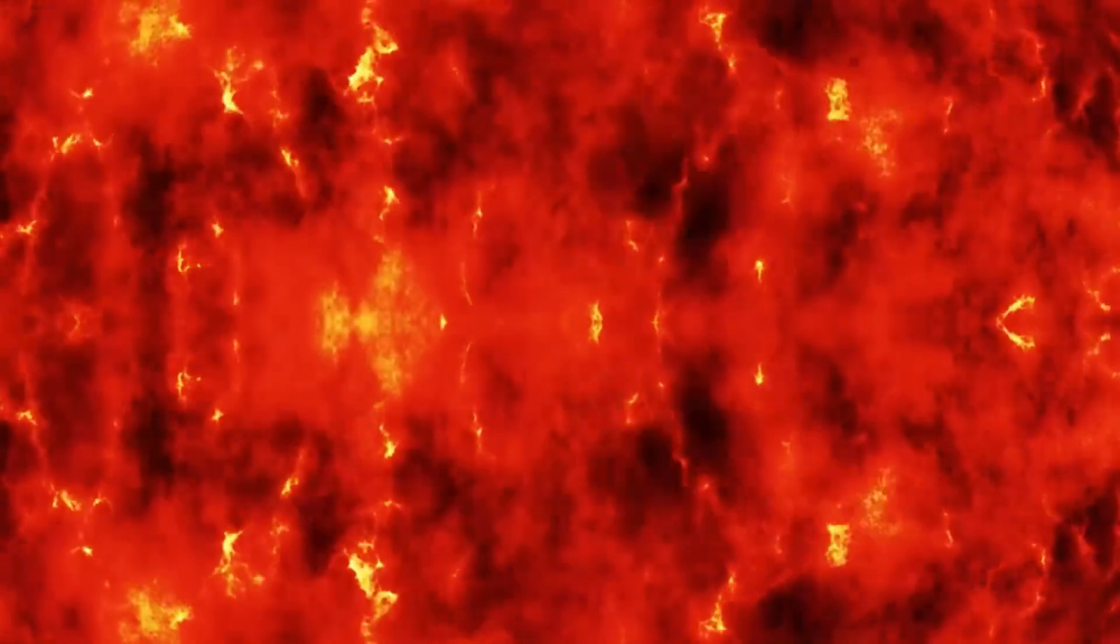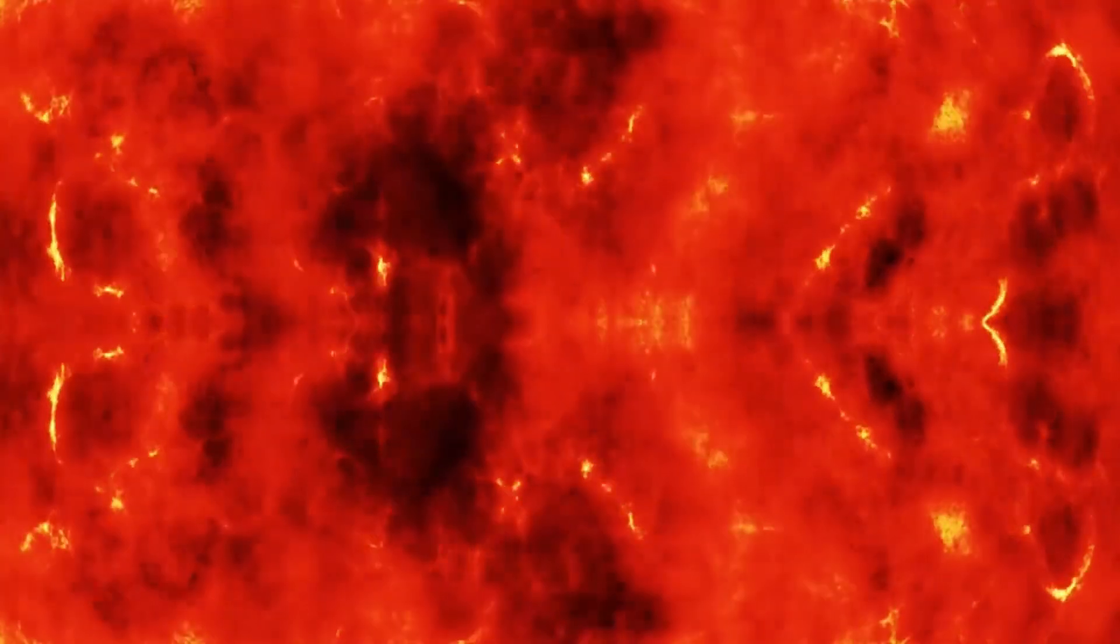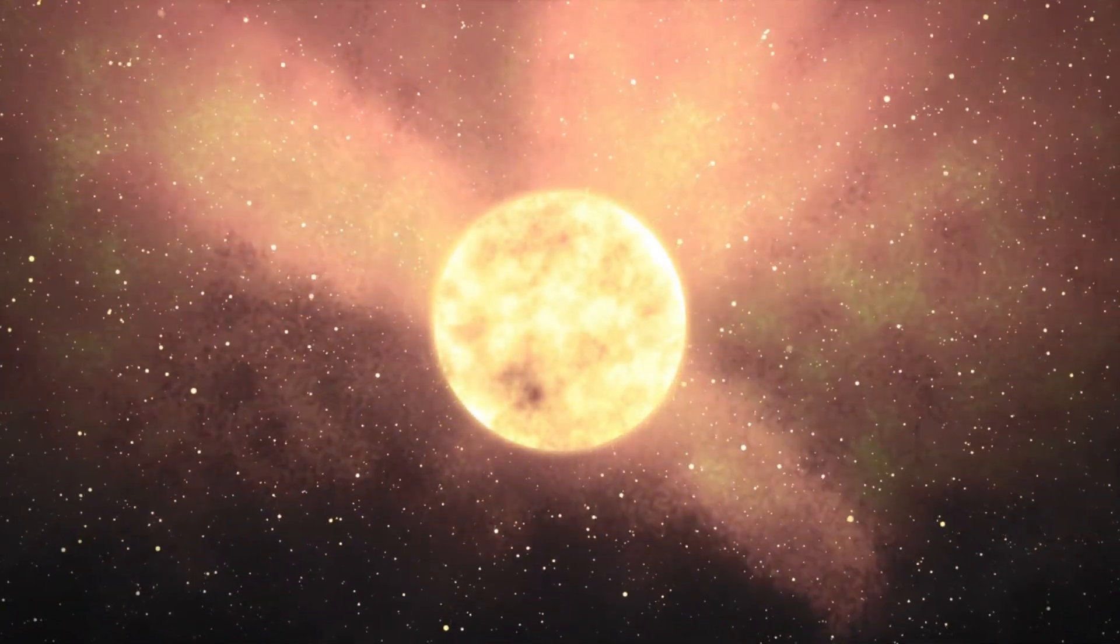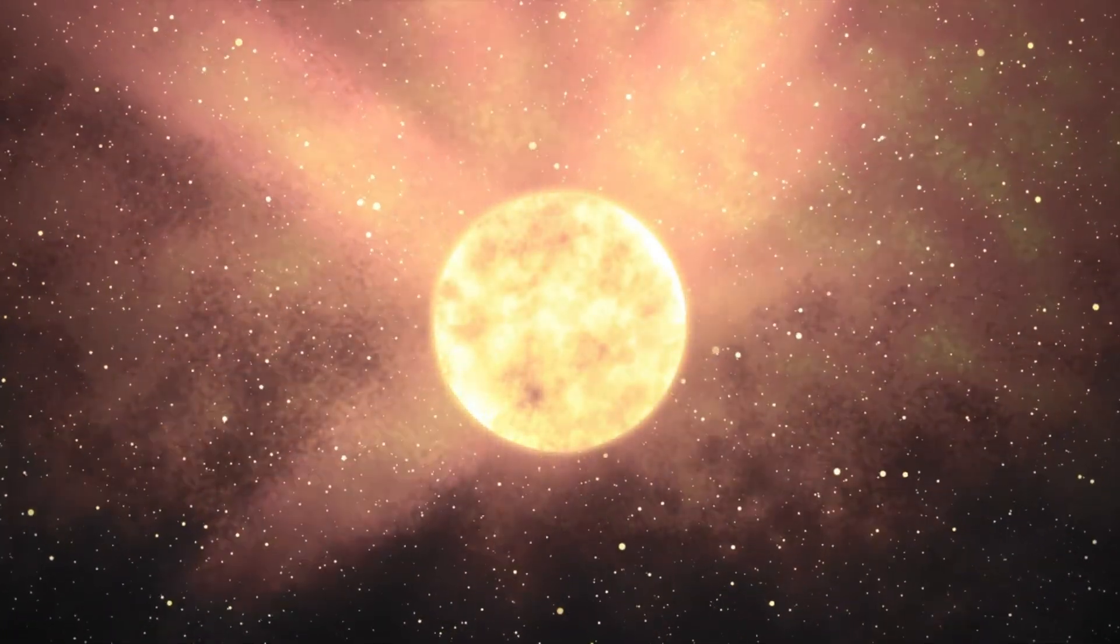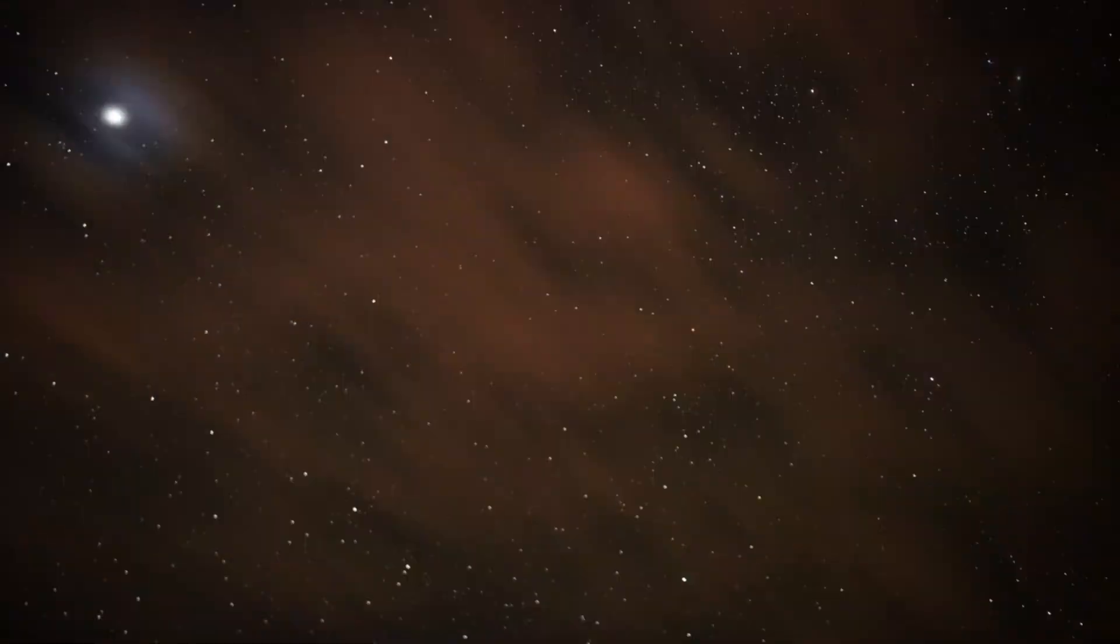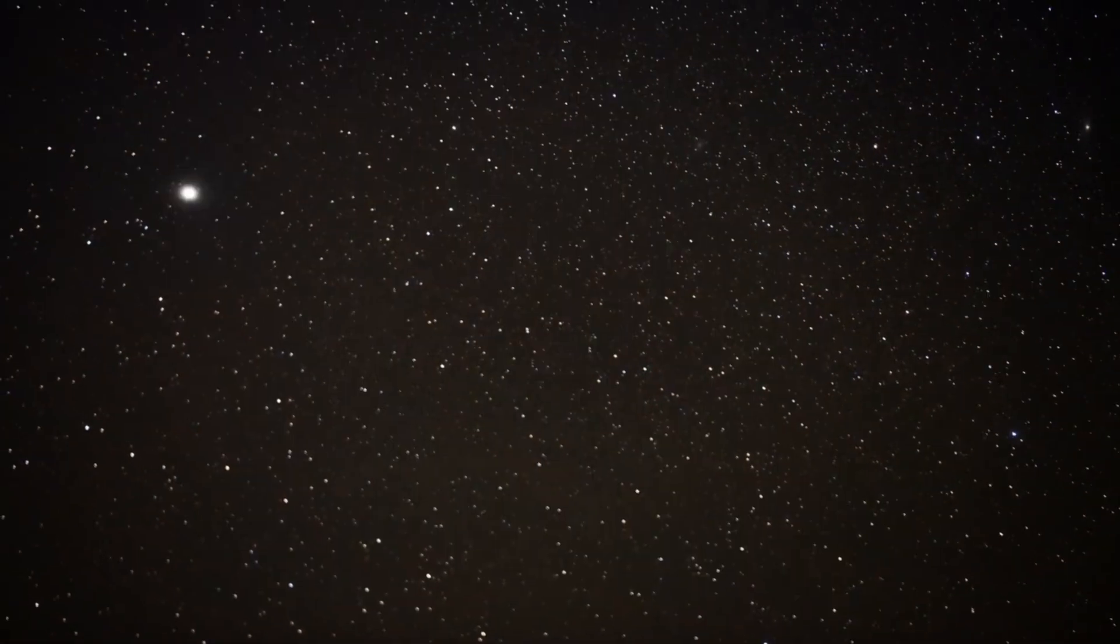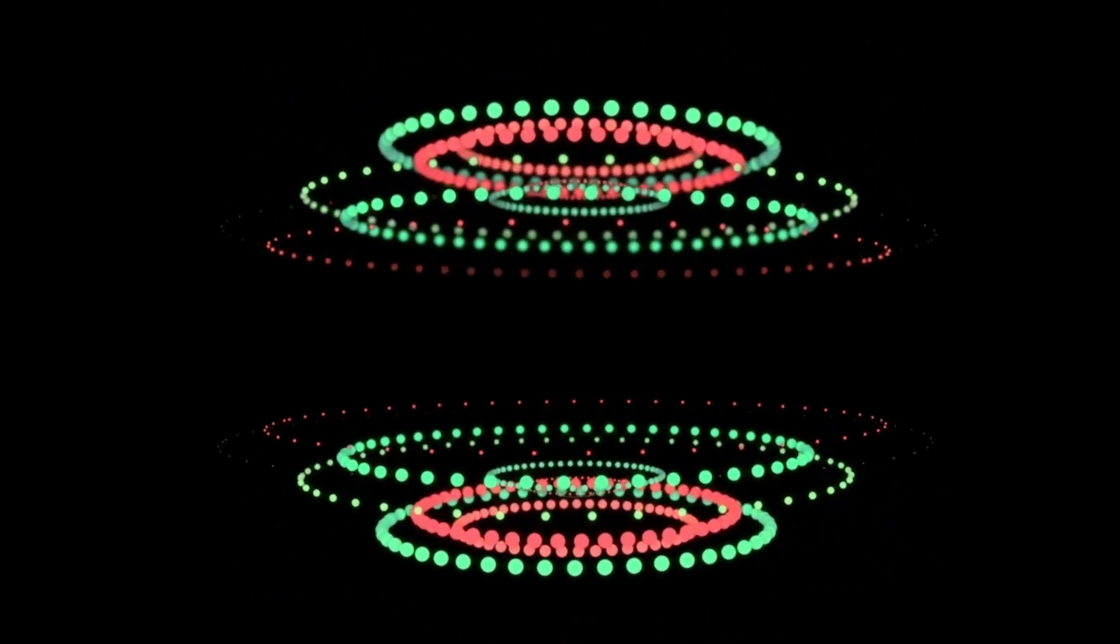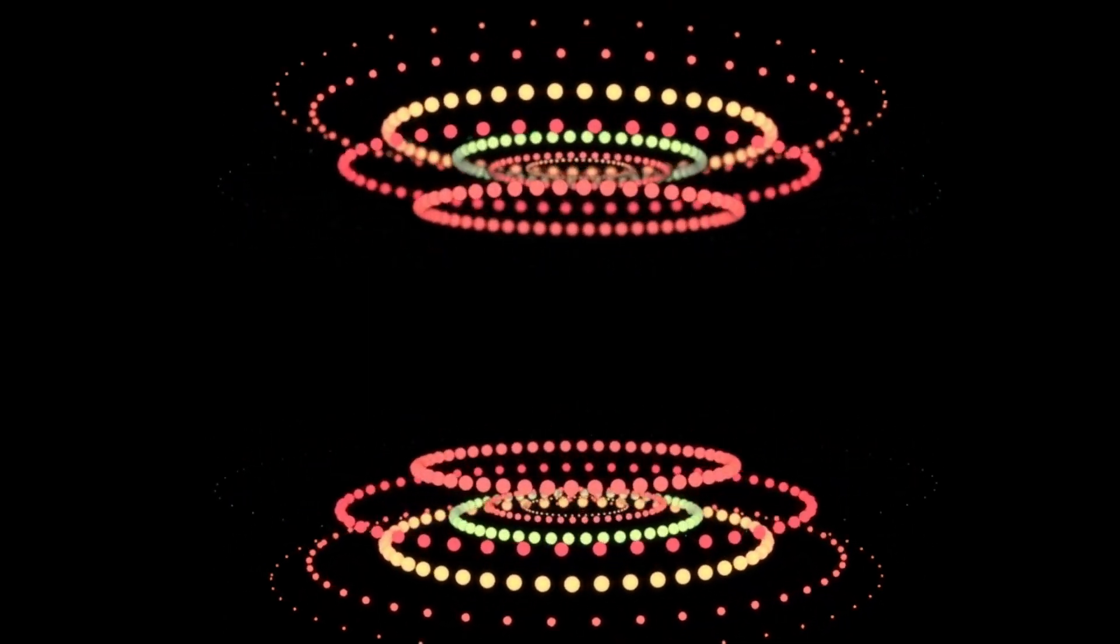Fortunately, Betelgeuse is distant enough from Earth to prevent any catastrophic consequences. But if such a supernova occurred closer to our planet, it could produce gamma-ray bursts capable of stripping away Earth's ozone layer, increasing harmful ultraviolet radiation, disrupting ecosystems, harming human health, and damaging global agriculture. The electromagnetic pulse from such an explosion could also interfere with satellites and electronic systems on Earth.